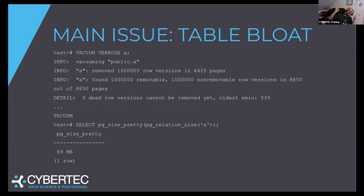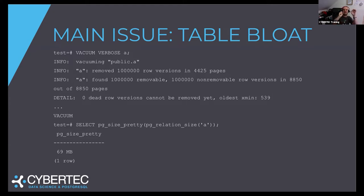So let's run vacuum. Vacuum says 1 million rows removable and 1 million rows non-removable. But at the end of the day, the size of the table is the same. We now have a million active rows and space worth a million rows that can be reallocated in the future, but it's still used on disk. The problem is that if you're running many updates and vacuum is not able to reclaim space efficiently, or if there are long-running transactions, your table is usually not going to shrink on disk. Once you create table bloat, it's very hard to get rid of it.